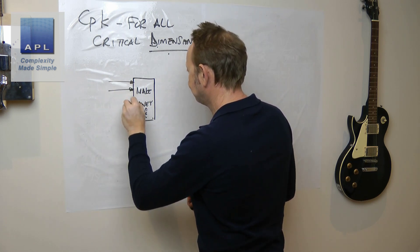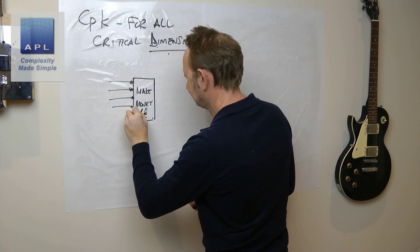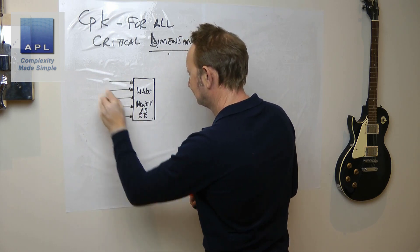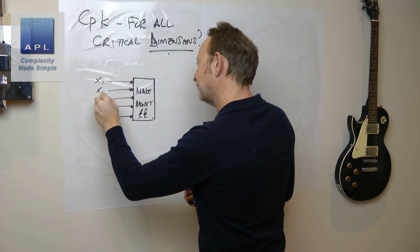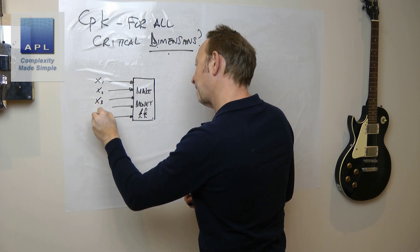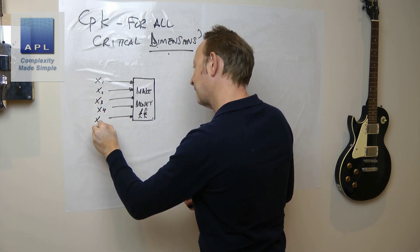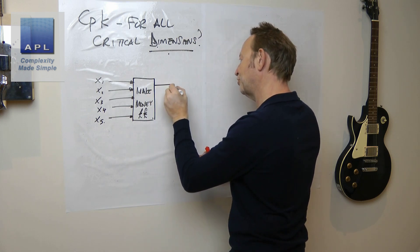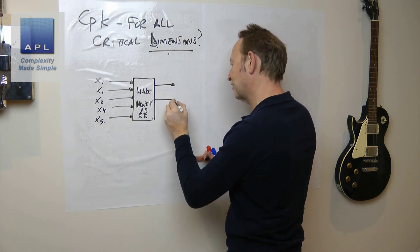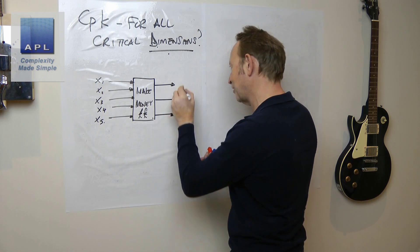You've got inputs and outputs. Let's say we have three critical dimensions: dimension A, dimension B, dimension C.